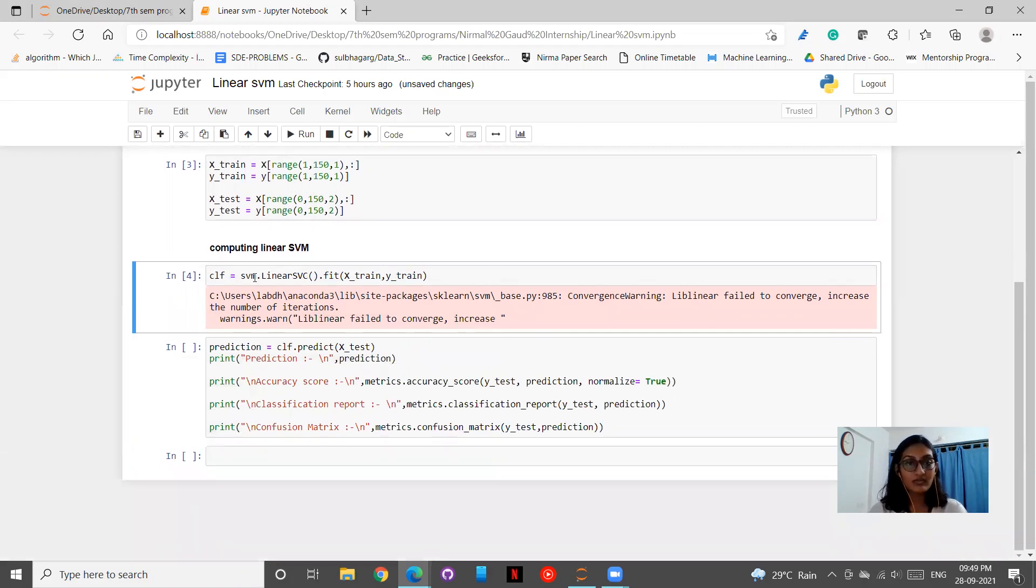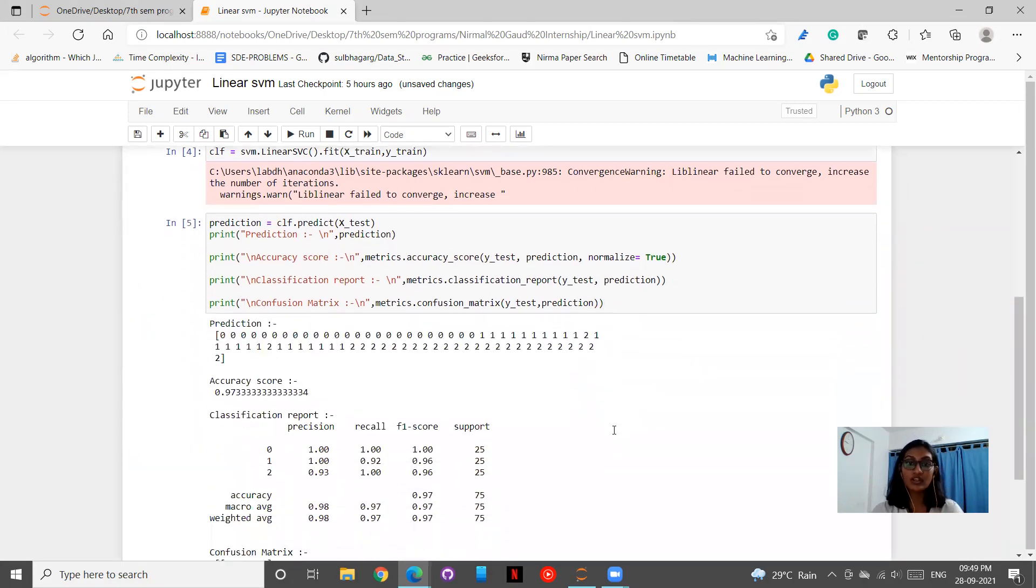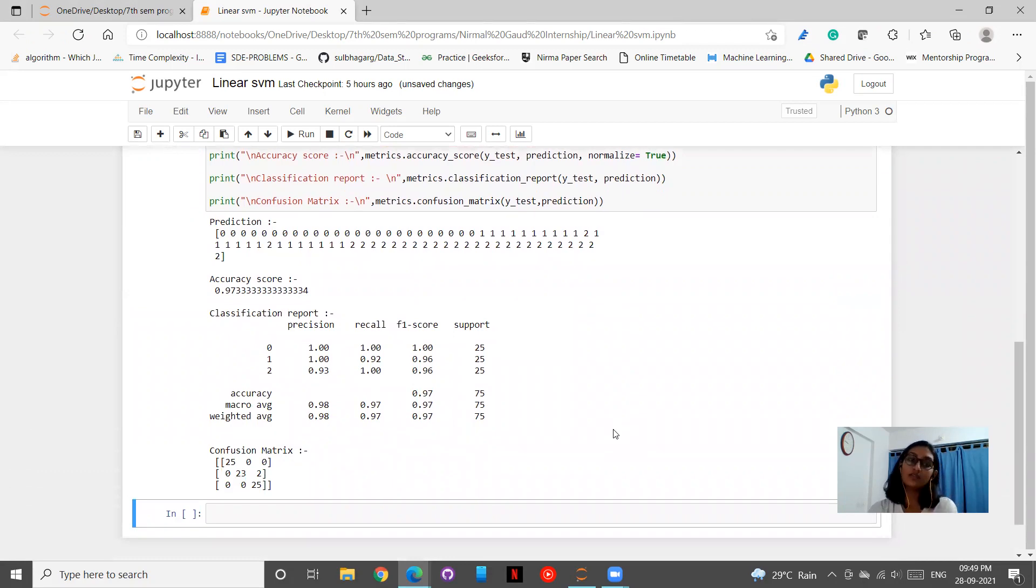Now this is how we have trained our classifier. We have fitted our X train and Y train to our classifier. We are substituting all these values in our CLF and thereafter we'll be trying to predict how well it performs on the unseen data. We'll be using this classifier to predict the values on X test and thereafter we'll be comparing the values that we get with Y test. We'll be calculating the accuracy score which is simply the correct values divided by the total number of values and thereafter we have the classification report and precision recall and confusion matrix.